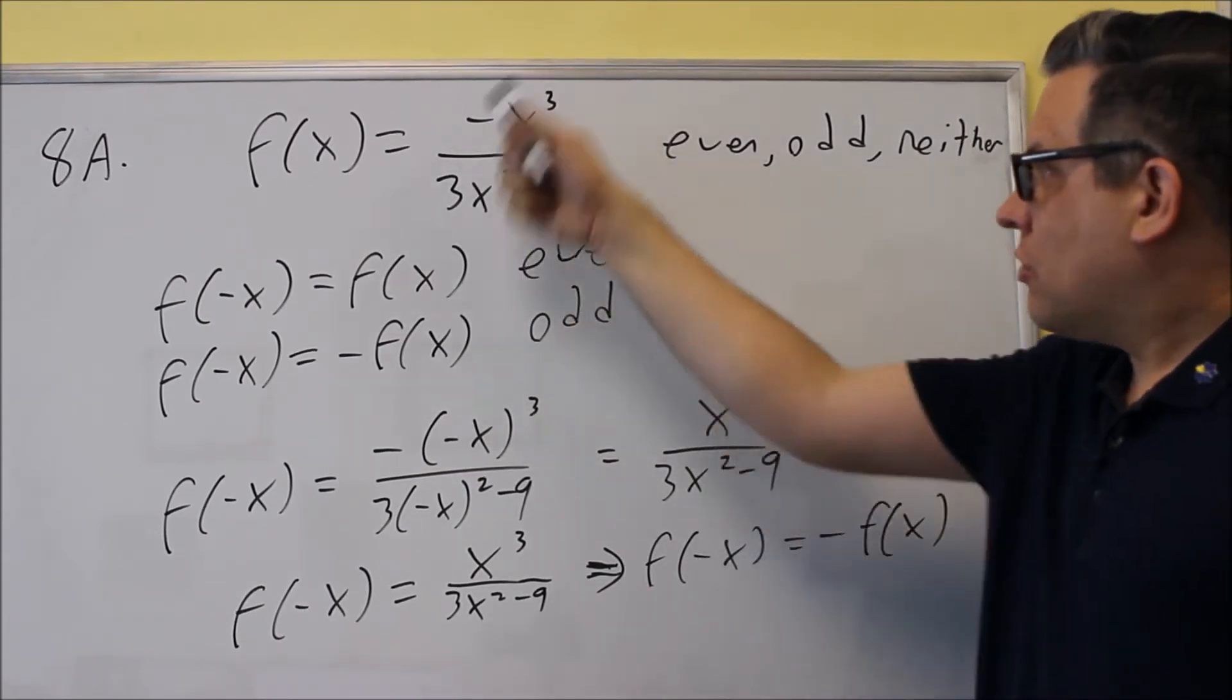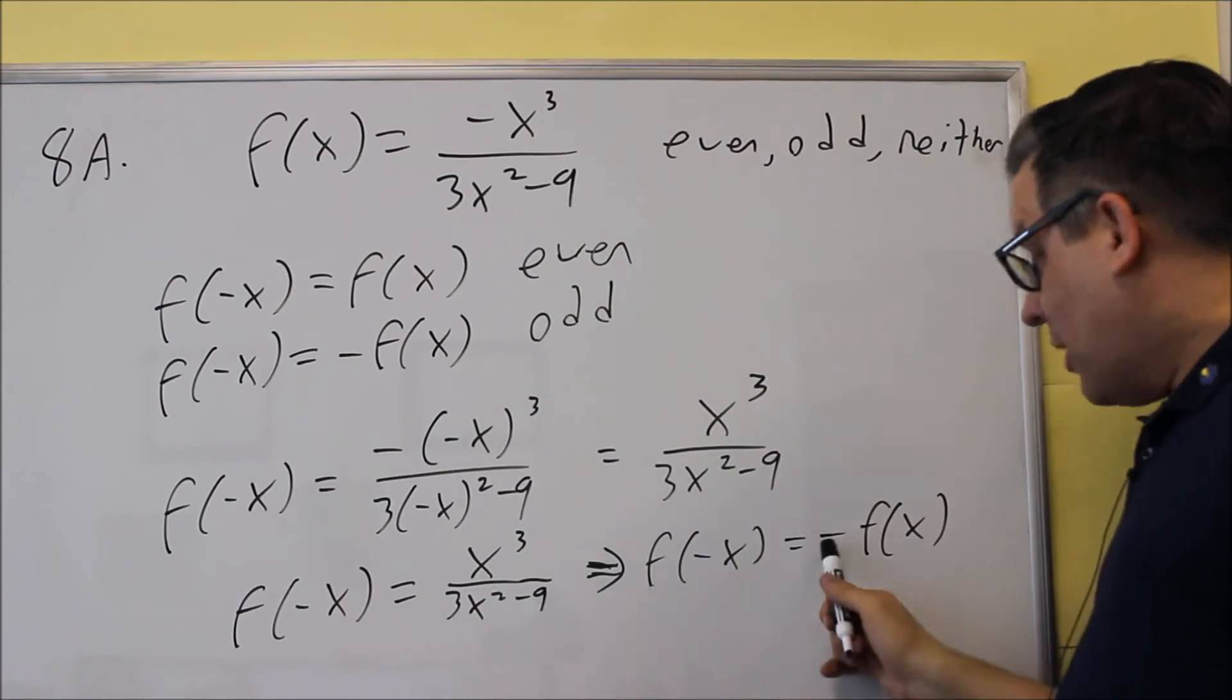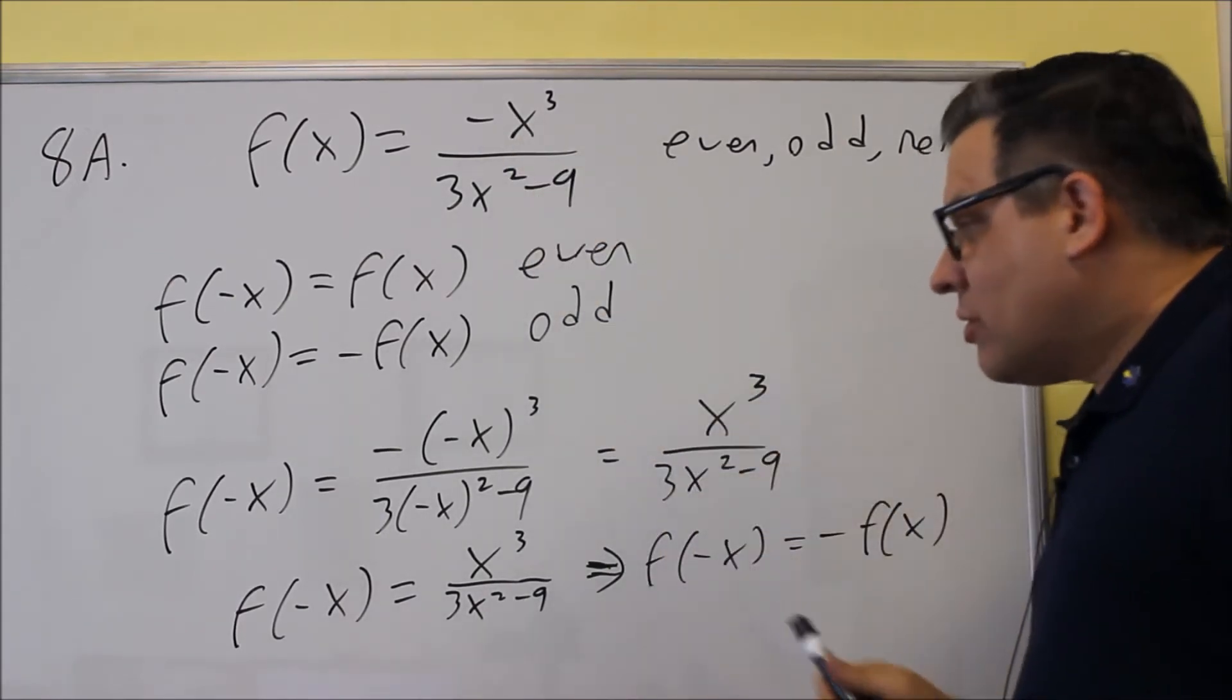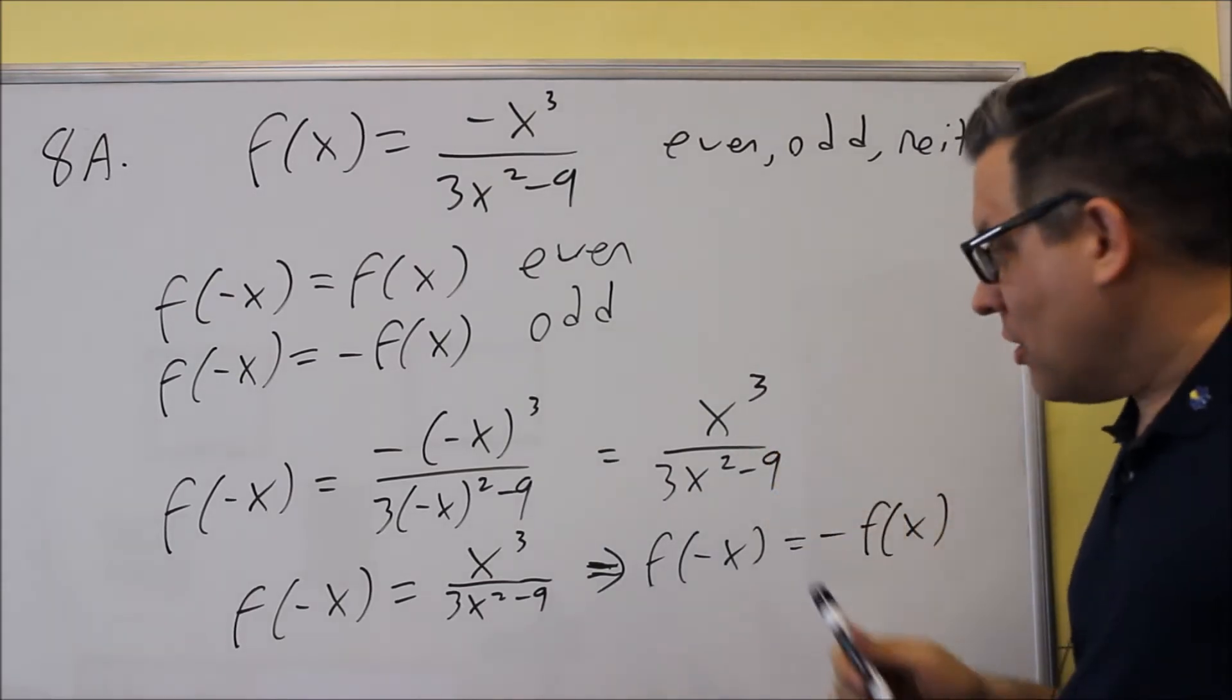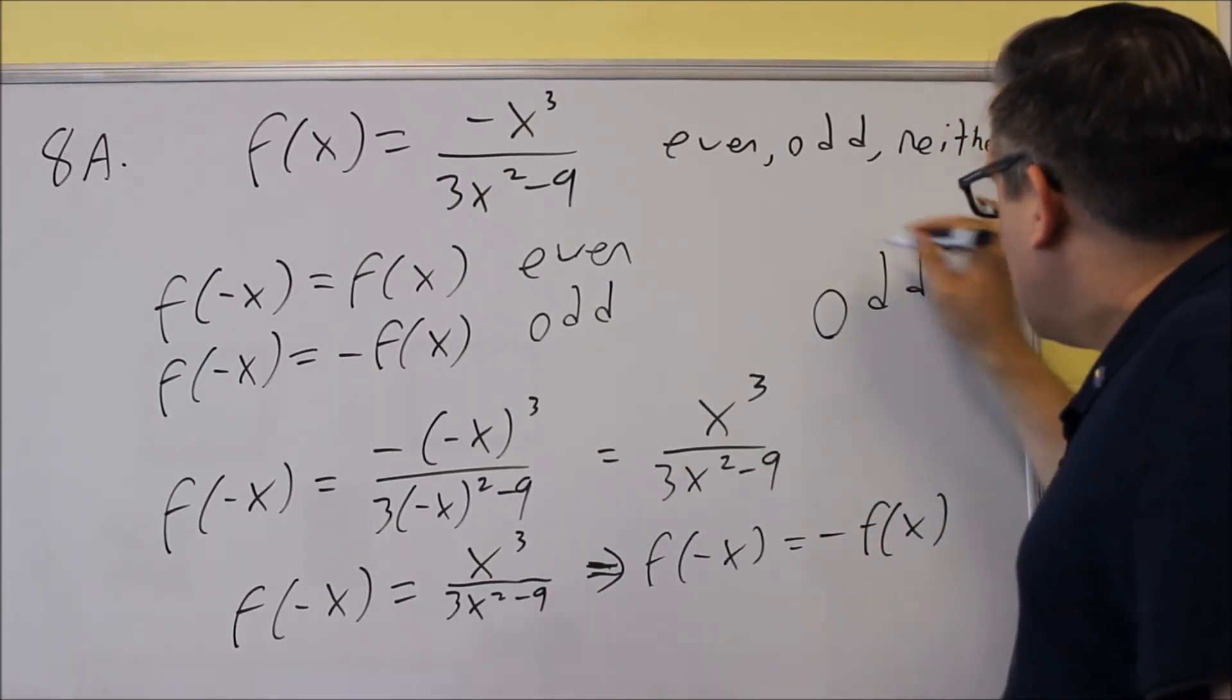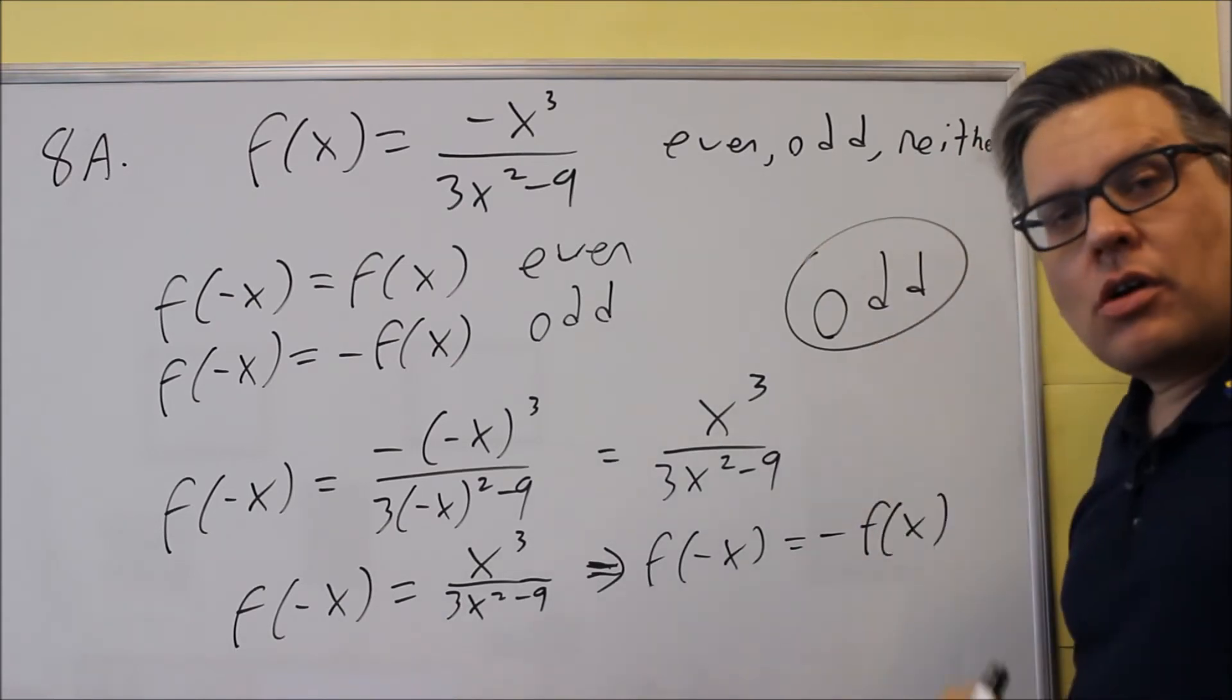So, if I take this one here and I multiply it by a negative, then that means I get exactly the same thing that I got here. So, therefore, because of that, what I would put here is for the answer, this one is odd.